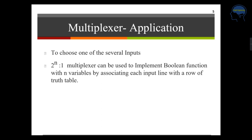So where is a multiplexer used? If you want to choose one of several inputs, you can use a multiplexer. The ratio is 2-to-the-power-N to 1. If N equals 3, then 2³ = 8, giving an 8-to-1 multiplexer. So you have 3 select lines for an 8-to-1 multiplexer, where N equals 3 — giving a 2^N-to-1 multiplexer.